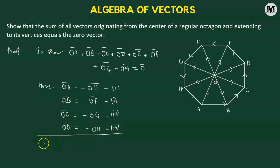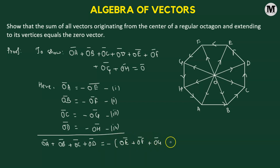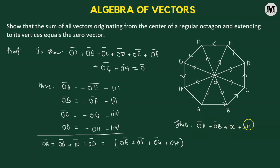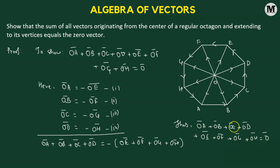Now we sum all the vectors. We have OA + OB + OC + OD on the left, and taking the negative as common on the right we get -(OE + OF + OG + OH). Thus OA + OB + OC + OD + OE + OF + OG + OH equals zero vector, because transposing all four vectors from the right-hand side to the left-hand side leaves nothing on the right — which is simply the zero vector. Hence proved.